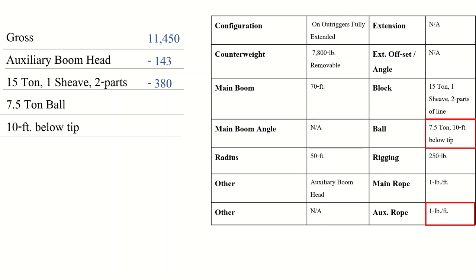Next we have the 7.5-ton ball, 10 feet below the boom tip. The ball is not being used for this pick — it's just hanging 10 feet off the end of the boom tip. So we need to deduct the weight of the ball and the 10 feet of rope we're not using. The auxiliary rope weighs 1 pound per foot, so 10 feet at 1 lb/ft gives us a 10-pound deduction. Next, the rigging weighs 250 pounds, so we take that into account as well.